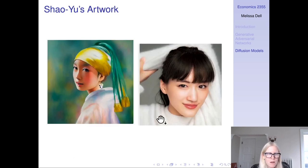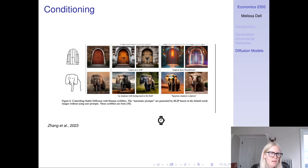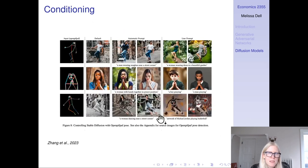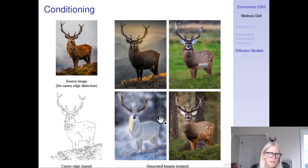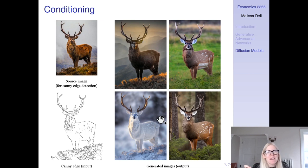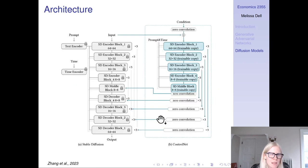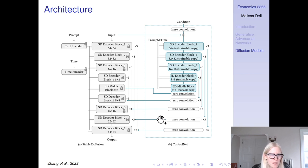I still think there's potential promise in this approach. We were talking in our reading group about how maybe instead of having edge detection of a deer, you could detect key points from characters or from document layouts and use those for conditioning. As long as you didn't have too many key points in a character, that would give you a lot of scope to have variation in the font. The good thing about ControlNet is it's incredibly efficient to train, since you're totally locking everything about stable diffusion and just training the control net portion of it.